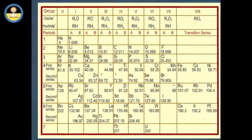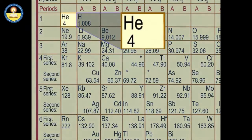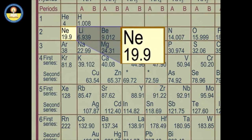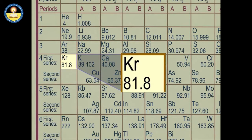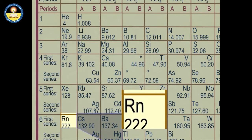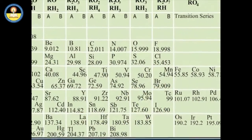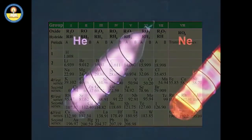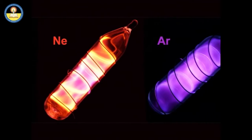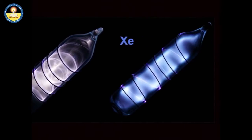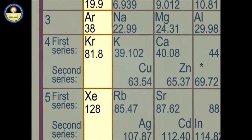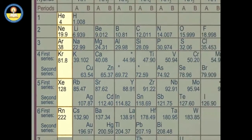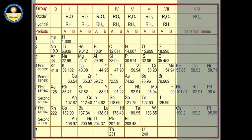The noble gases — helium (He), neon (Ne), argon (Ar), krypton (Kr), xenon, and radon (Rn) — were not known when Mendeleev gave his periodic table. These gases were discovered much later because they are very inert and are present in extremely low concentrations in our atmosphere. Another strength of the periodic table was that when these gases were discovered much later around the year 1900, they could be placed in a new group called zero group without disturbing the existing order.